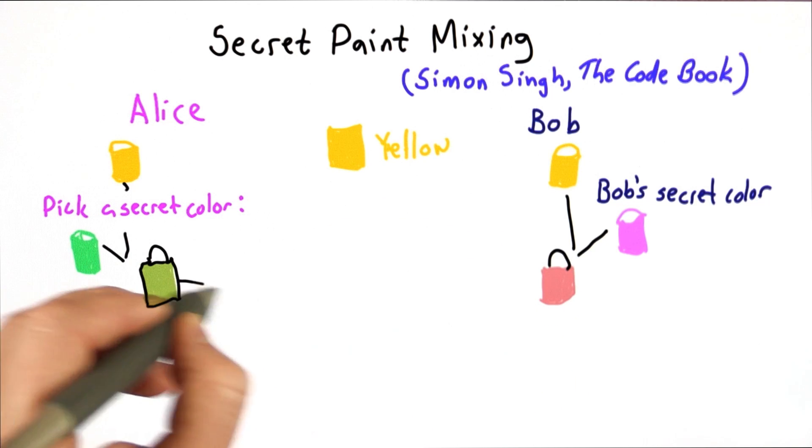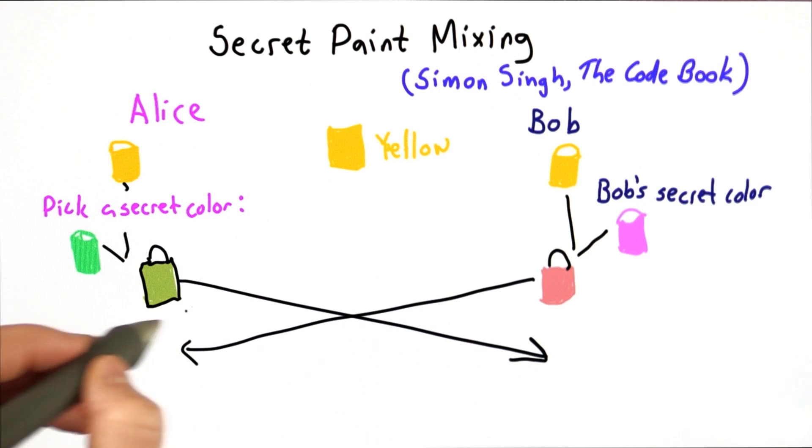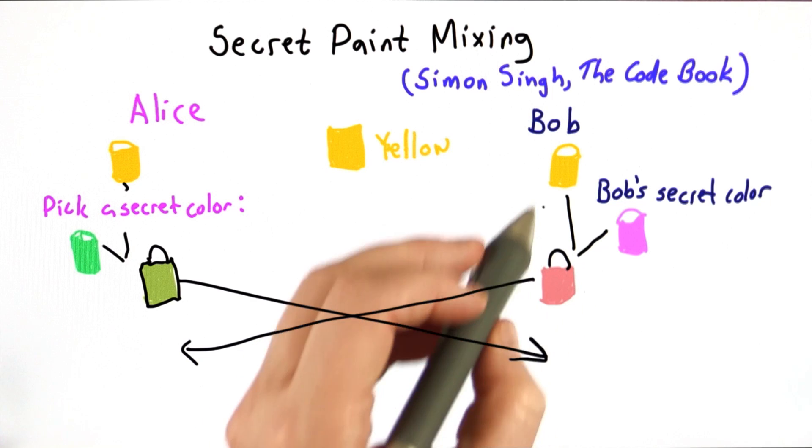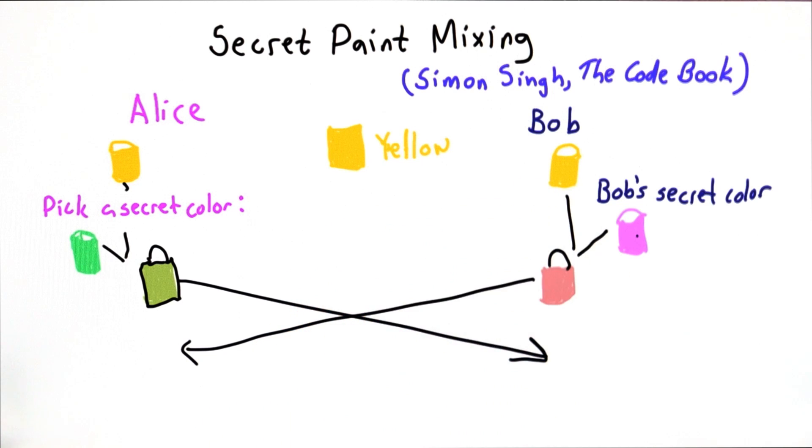So at this stage, they exchange colors. Alice gives Bob the ugly green color that she got by mixing her secret color with yellow. Bob gives Alice the ugly pinkish color he got by mixing yellow with his secret color.